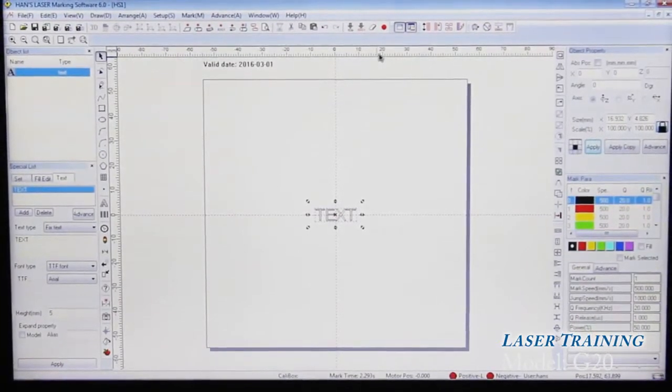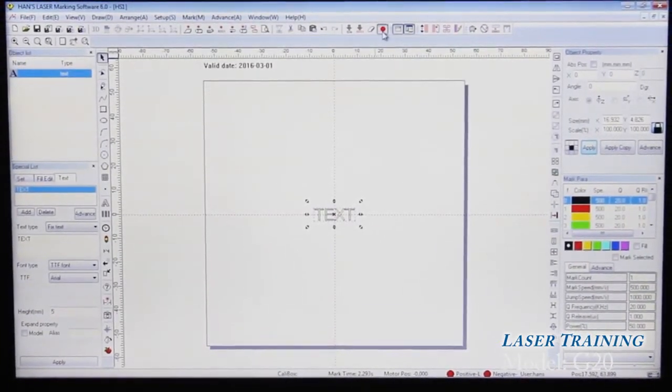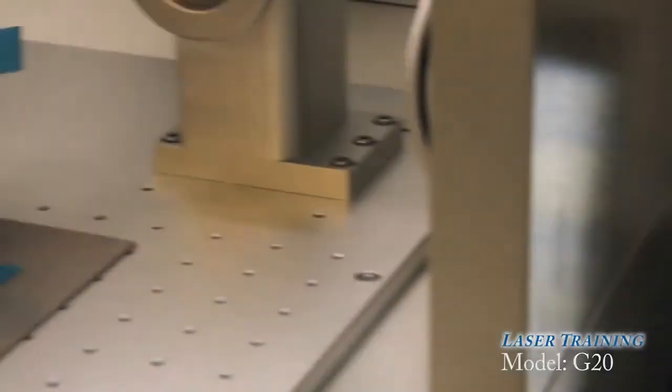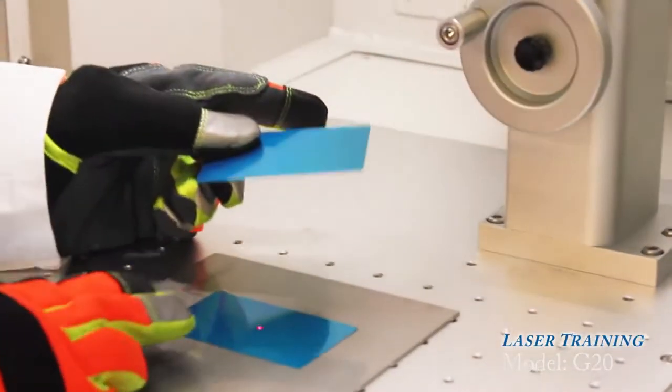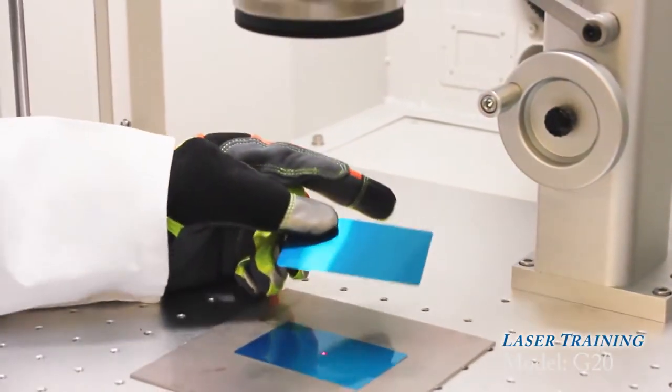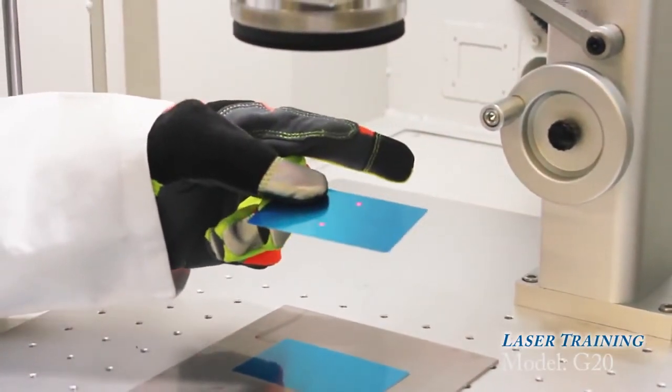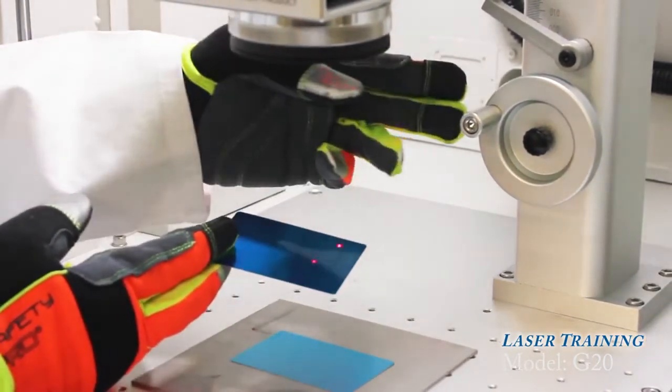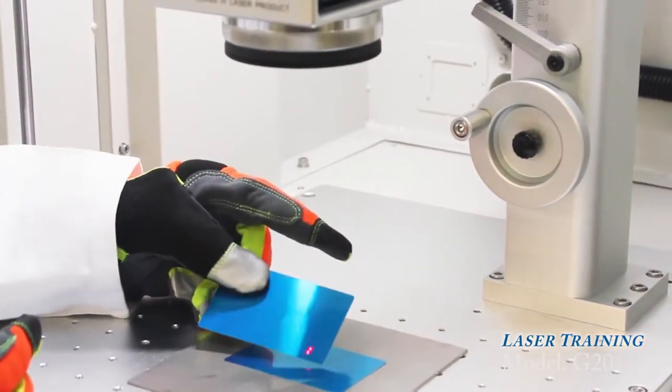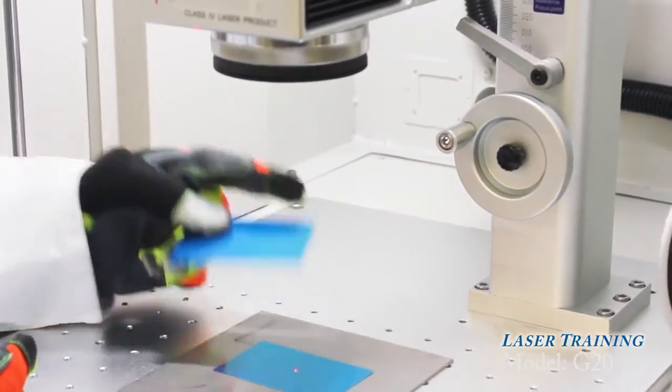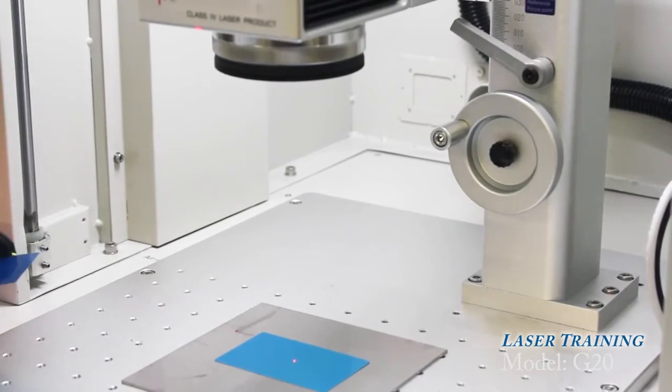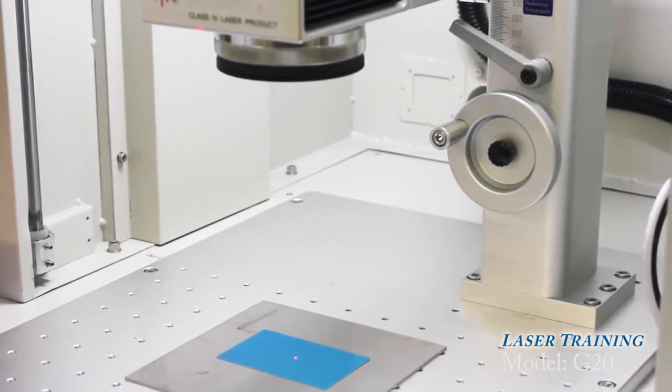To find the focus for your marking area, you can click on this icon here. As you can see, you're going to have the red light here, and you actually have two red lights. To find focus, you would just adjust the height until you have one single dot, and that will be your focus point. That will be your ideal setting for most items on how to etch your part.